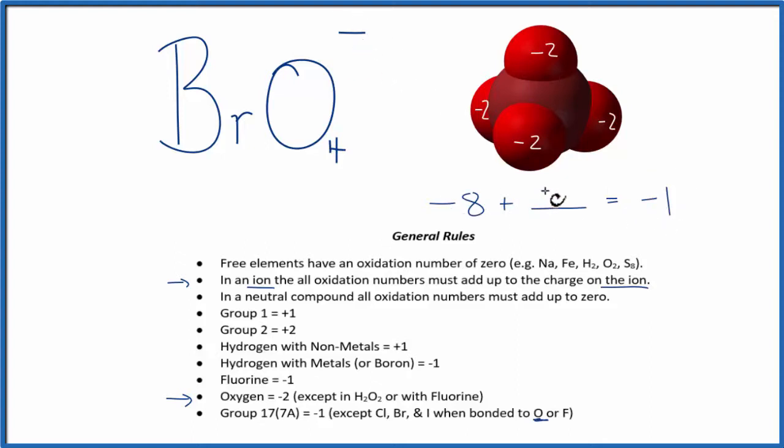Minus 8 and a positive 7, that would end up with minus 1, so this 7 is the oxidation number on the central bromine.